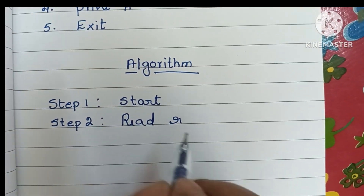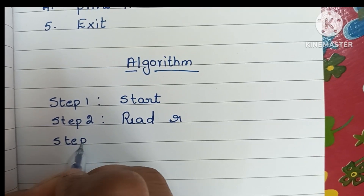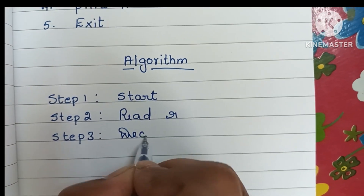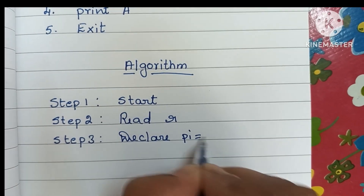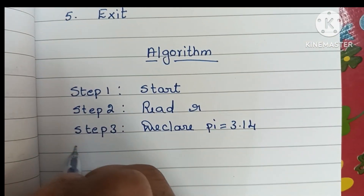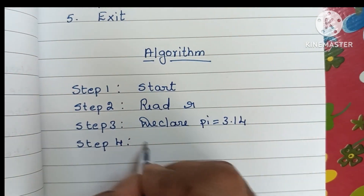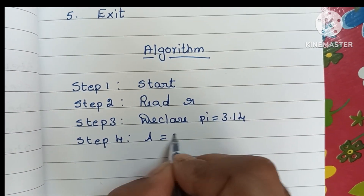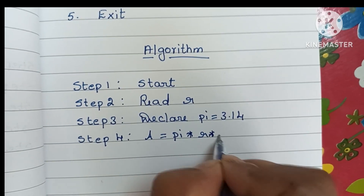In step three, we have to declare the pi value: pi is equal to 3.14. In step four, we start the calculation — the area of the circle: A is equal to pi into r into r.